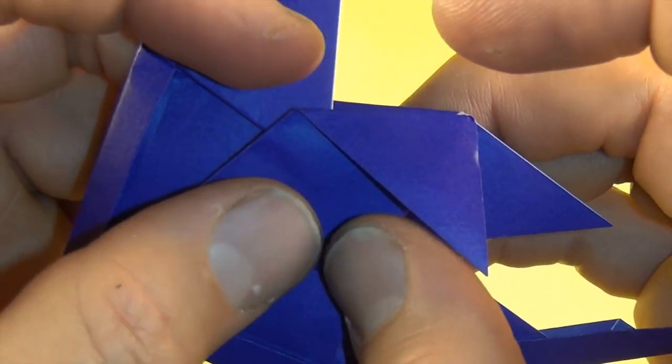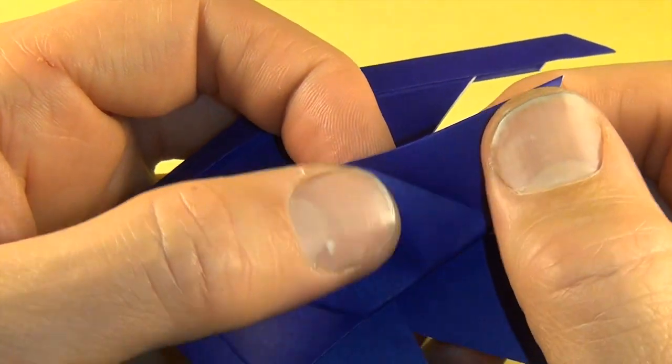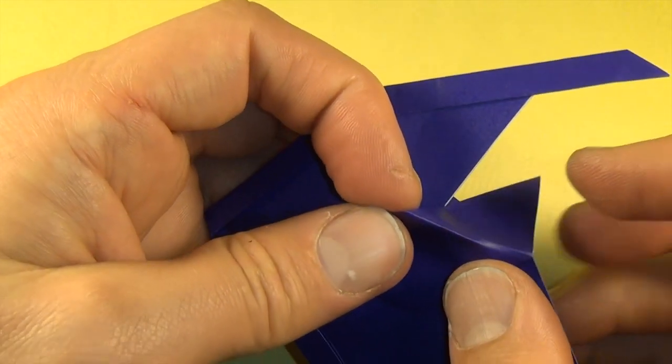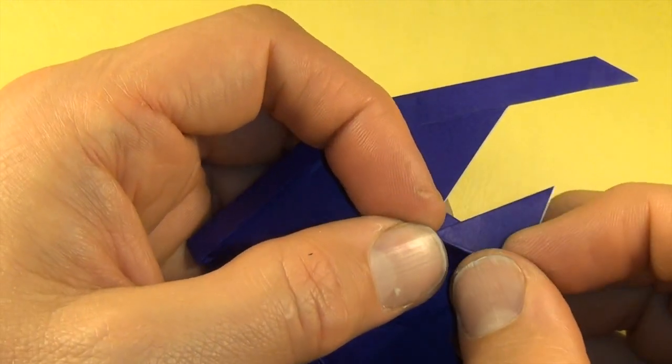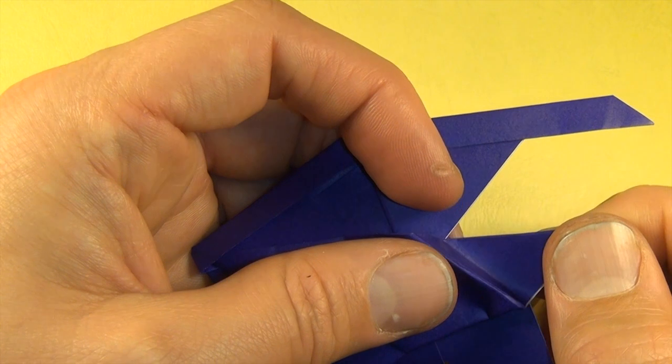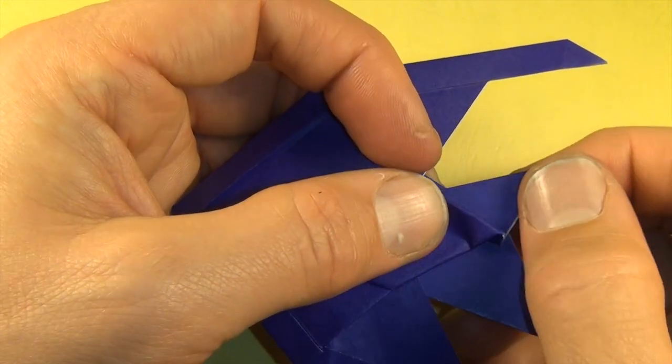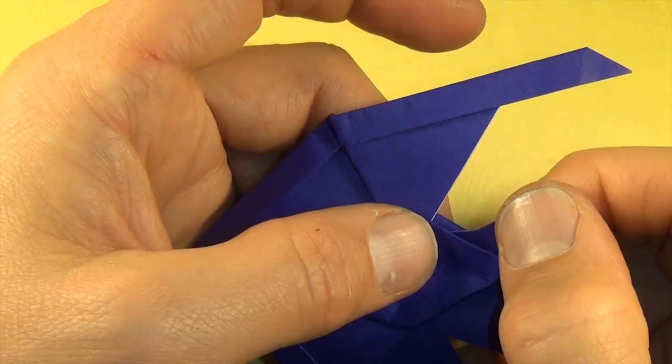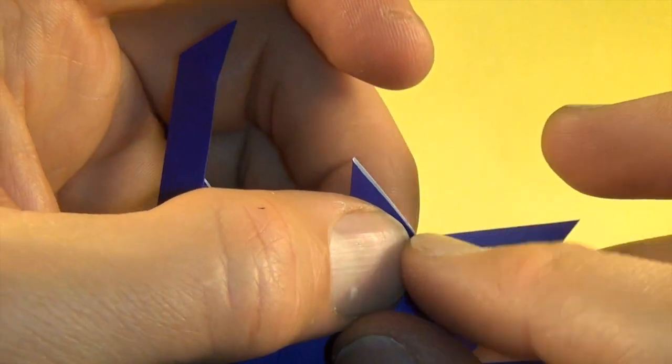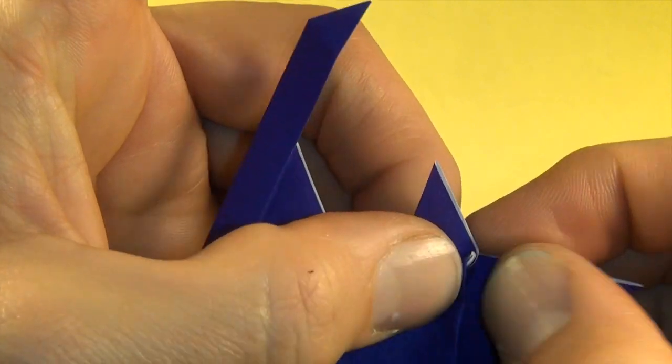And now turn this into a mountain fold. And make a pleat right here that comes like that. And then this little corner right here gets tucked inside.